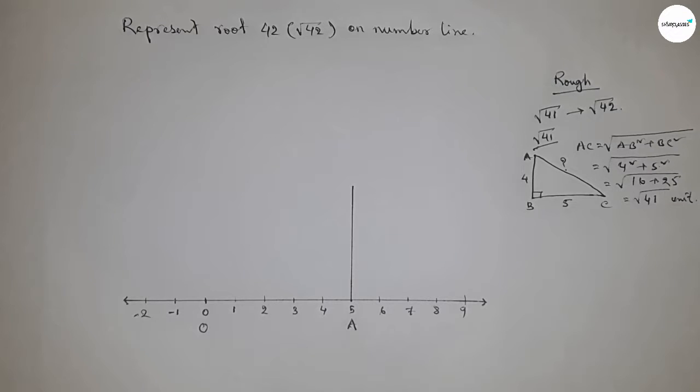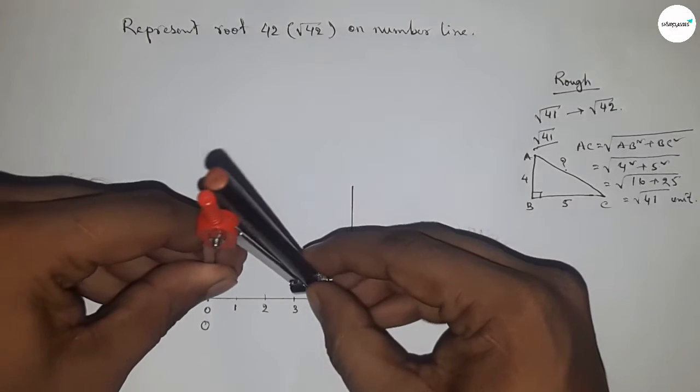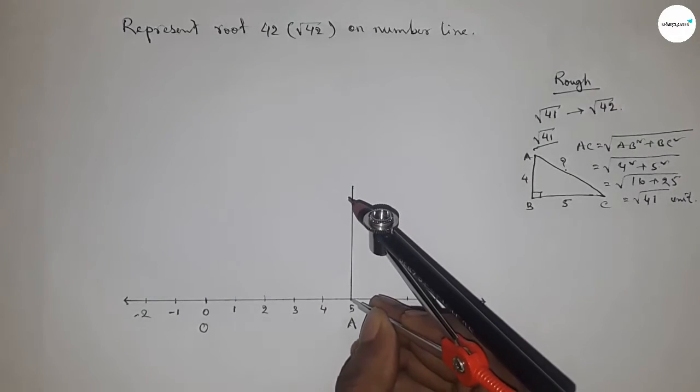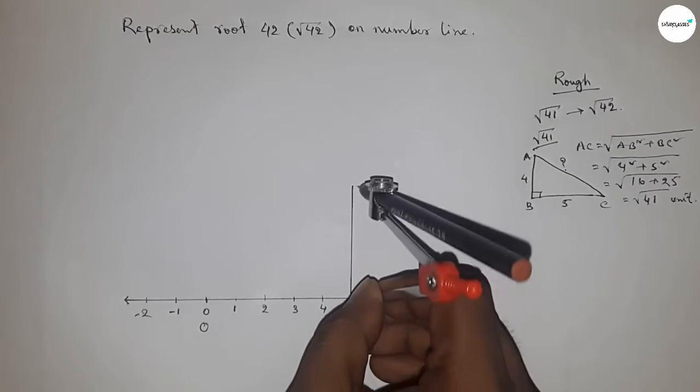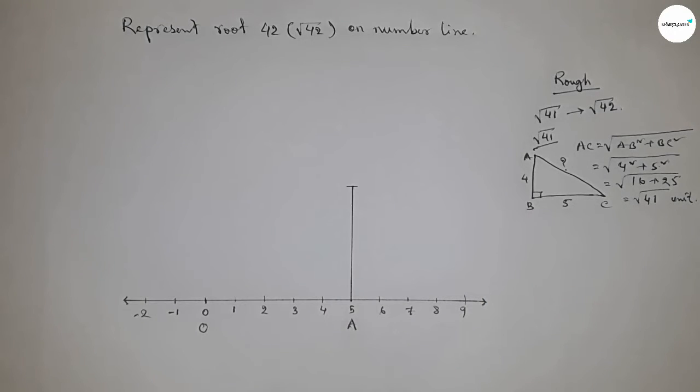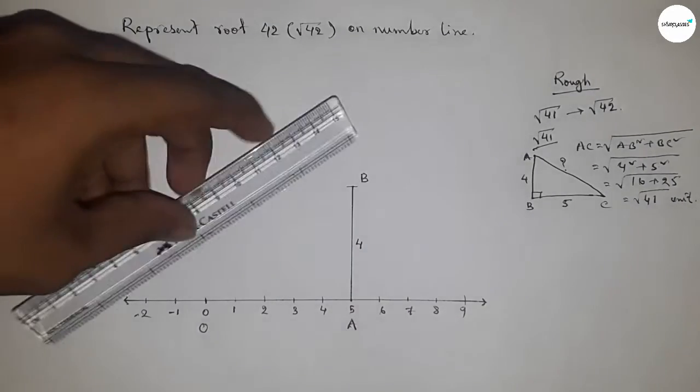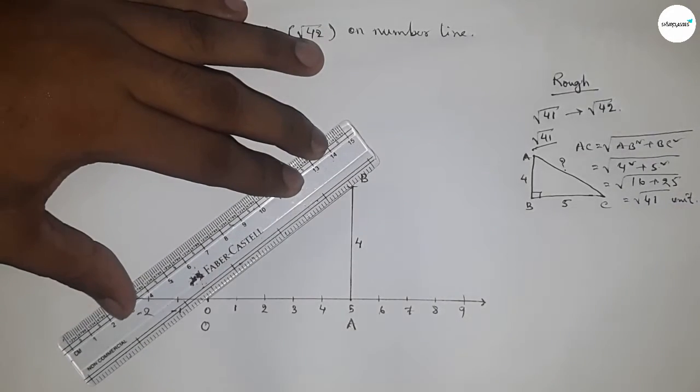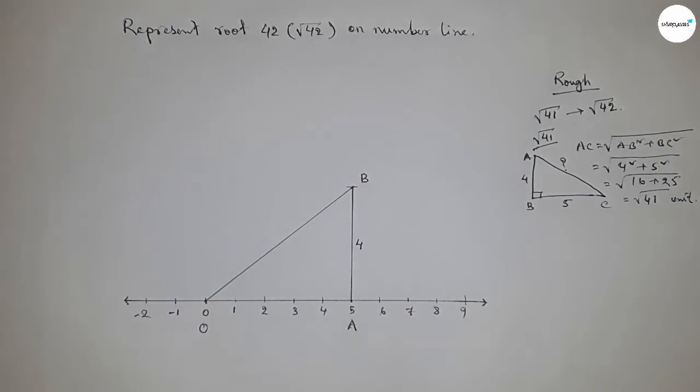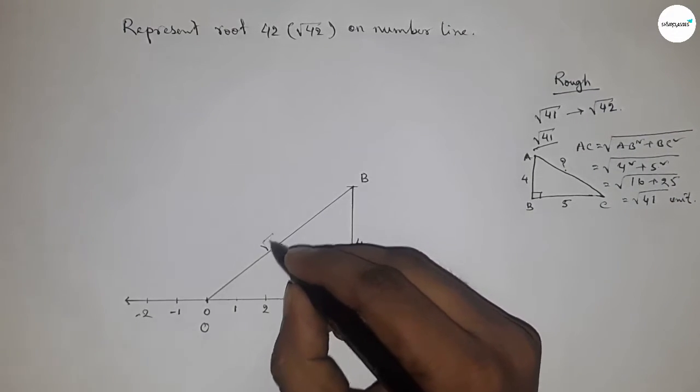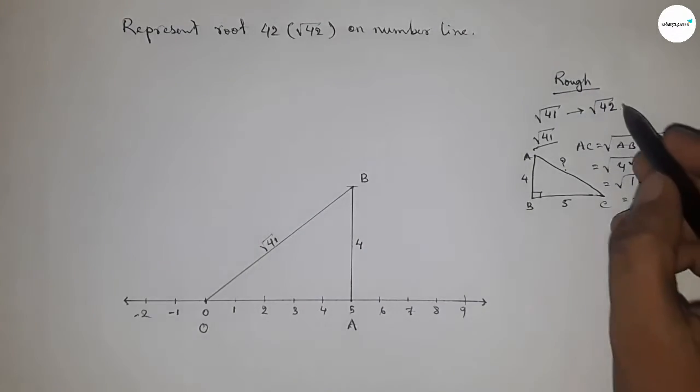Now taking the length 4 unit by compass and putting the compass here and cut here. Okay, so this is B point and this is 4 unit length. Now joining O and B. Okay. Next, this is root 41.